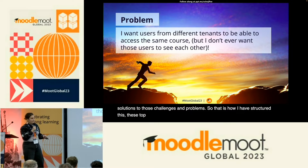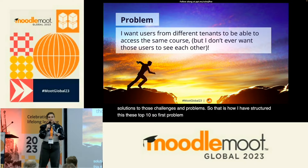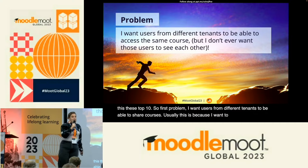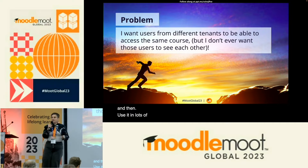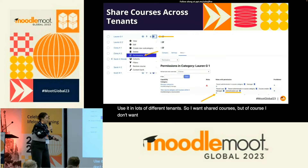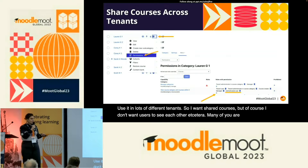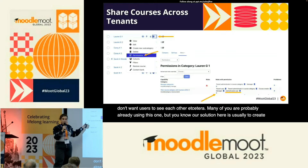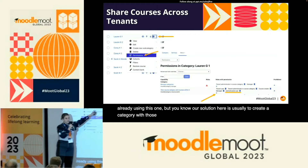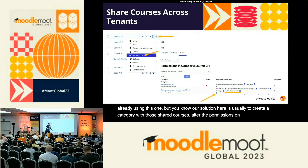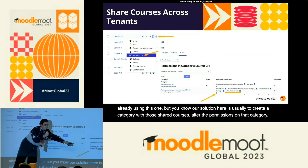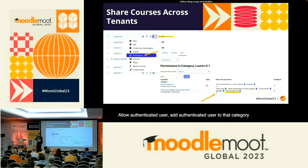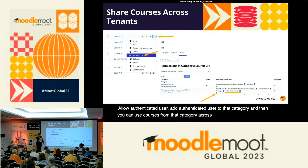First problem: I want users from different tenants to be able to share courses. Usually this is because I want to create one course and then use it in lots of different tenants — shared courses, but I don't want users to see each other. The solution is to create a category with those shared courses, alter the permissions on that category, allow authenticated users, add authenticated users to that category, and then you can use courses from that category across tenants.